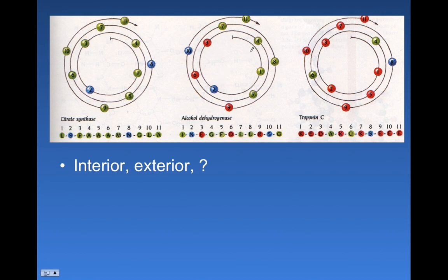And so, where would this one exist in a globular protein? It would probably be on the surface, with this part pointing toward the interior of the protein, and this polar part pointing towards the solvent on the outside.